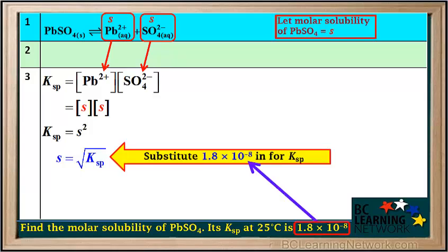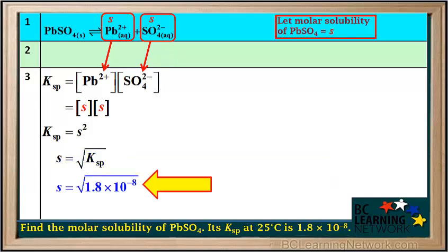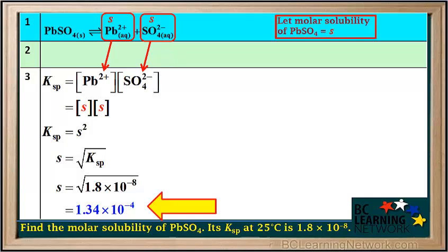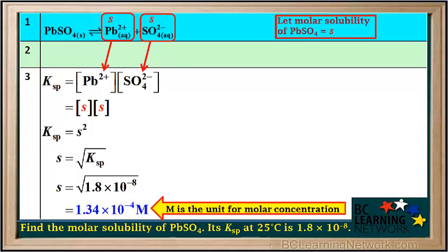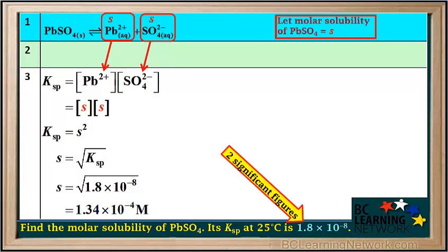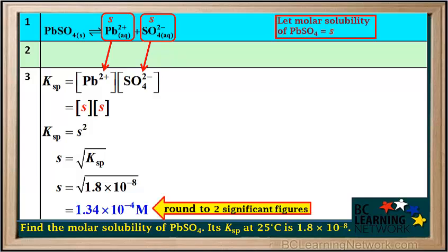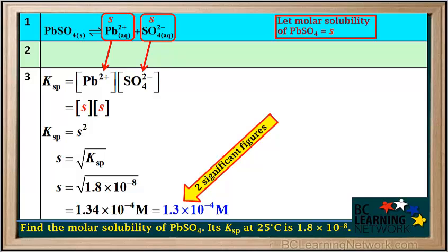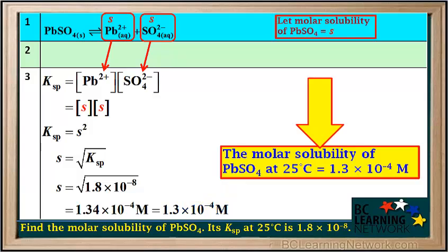In the next step, we substitute the given value of 1.8 × 10⁻⁸ in for Ksp. So S equals the square root of 1.8 × 10⁻⁸, which comes out to 1.34 × 10⁻⁴. Because S is molar solubility, it must have a concentration unit, so we use the unit M for molar concentration. The Ksp value had two significant figures, so we round to two significant figures, giving us 1.3 × 10⁻⁴ M. The molar solubility of PbSO4 at 25 degrees is 1.3 × 10⁻⁴ M.